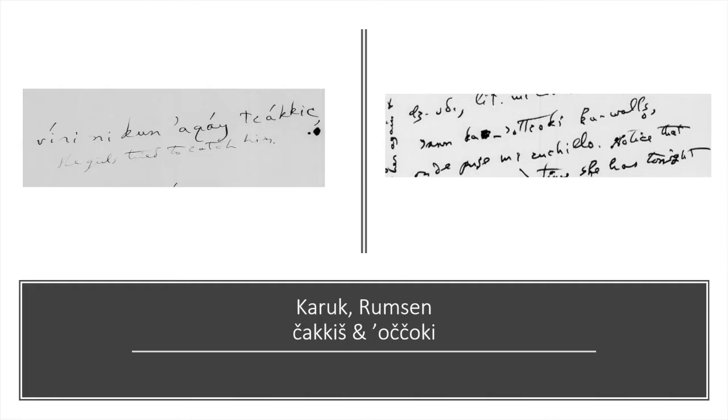So, let's look at what they look like. So, here, you can see in the first one, this is Karuk. The girls try to catch him. If we look at the last word, Chak-kish, we'll see that TC at the beginning is the CH sound, Chak-kish. And, if we look on the right, for Rumsun, if we look at where did I put my knife, you'll see Ochokki. O-T-T-C-O-K-I. Ochokki. The TTC, the double T, kind of just means that it's a long CH sound. Ochokki. You hold it. So, as you go through the notes, you'll become more familiar with the language and how he writes it.